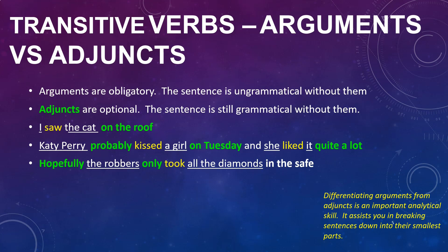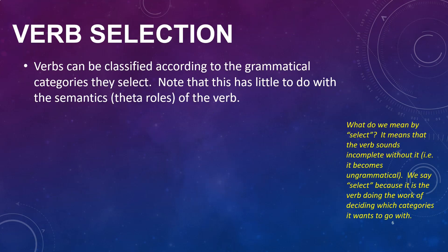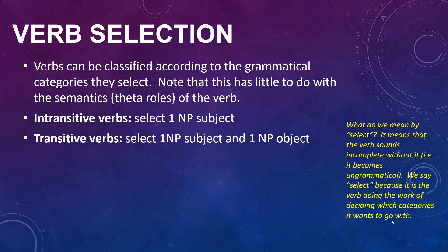Verbs can be classified according to the grammatical categories that they select. Most often we think of these as nouns, but in fact verbs can select a number of other grammatical categories including prepositions, sentences, etc. Transitive verbs, which you might have heard of before, typically select one noun phrase as subject and also one noun phrase object.